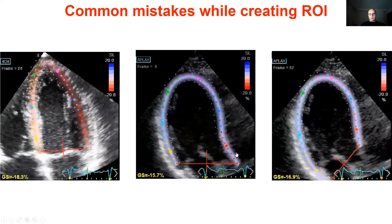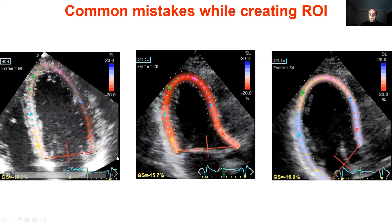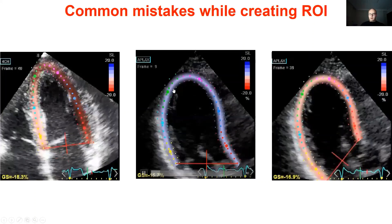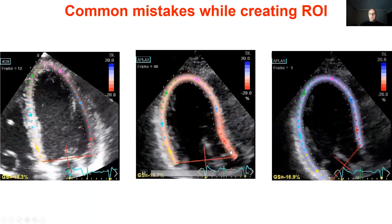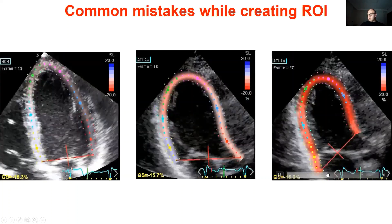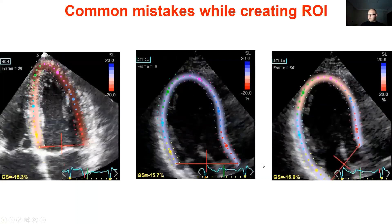I want to show some examples of common mistakes while creating the region of interest. Detection of reference anatomical structures is really important. In the first image, the region of interest is exceeding the apical epicardium, which is wrong. In the middle image, tracing of the anteroseptum is wrong and should not extend into the LVOT. In the third image, there is an example of inappropriate tracking of the mitral annulus. The mitral annulus should be identified properly and the region of interest should not exceed the insertion of the mitral valve leaflets.